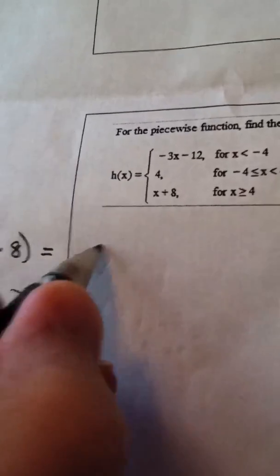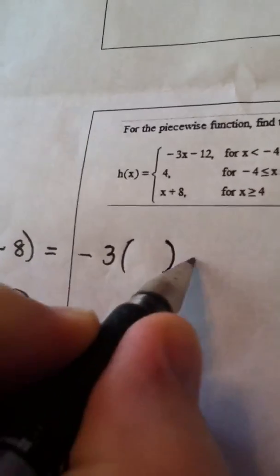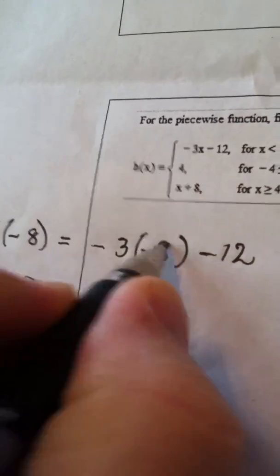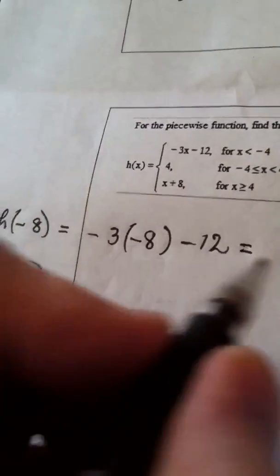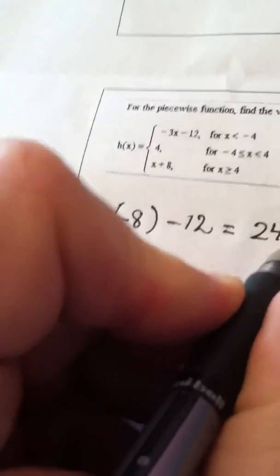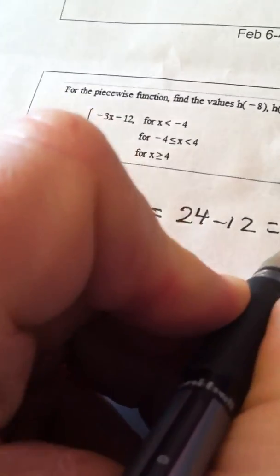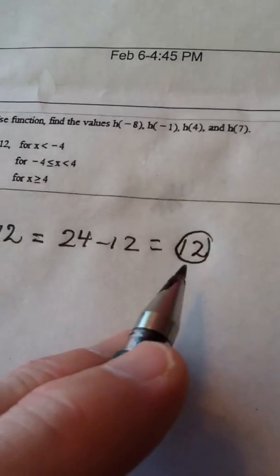I take negative 3 times whatever minus 12. That's the top formula. And I put in a negative 8. So I come out with 24 minus 12. So my answer is 12. Final answer.